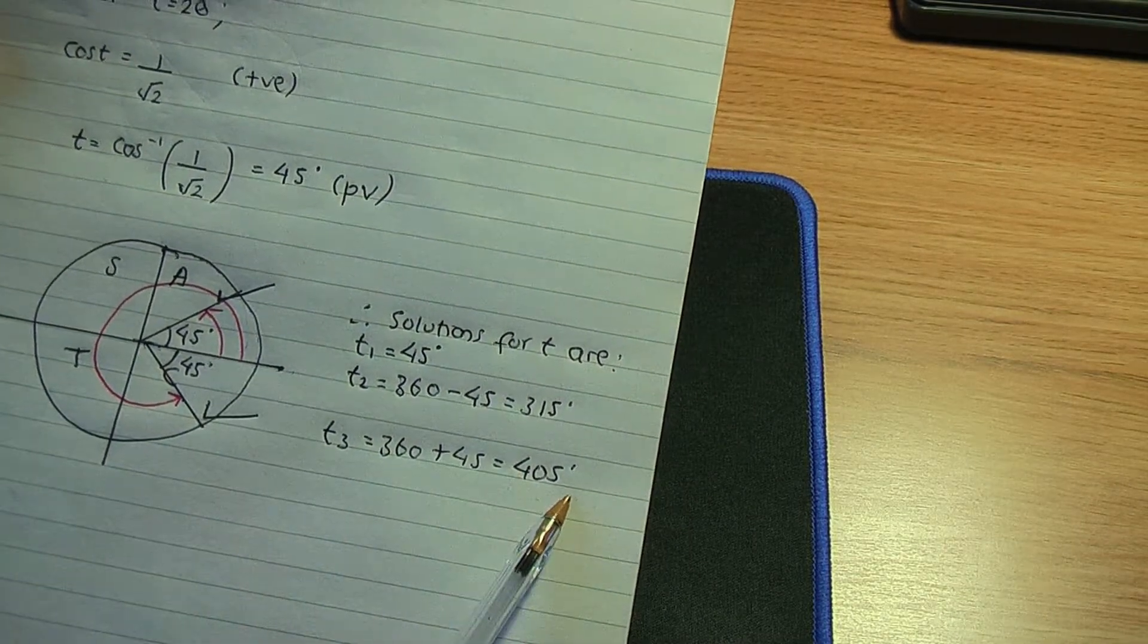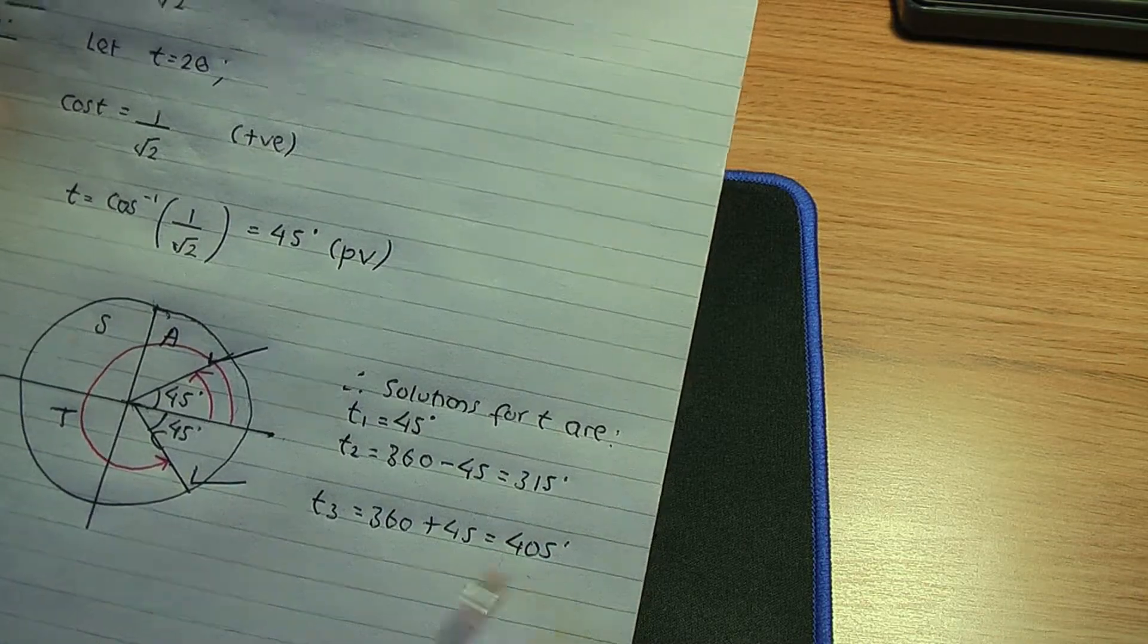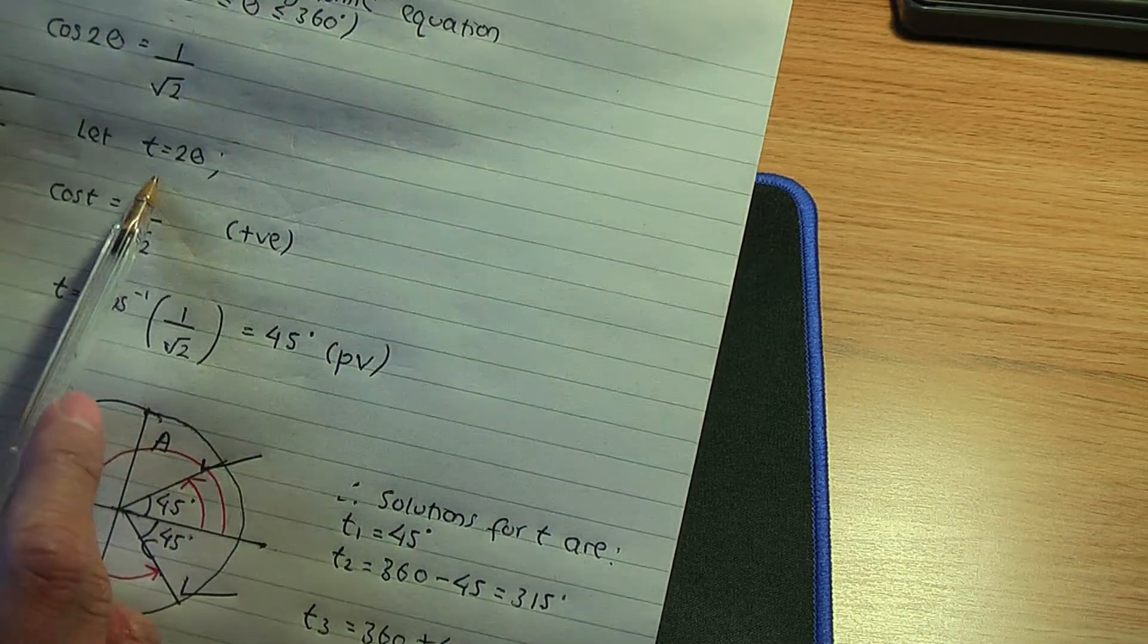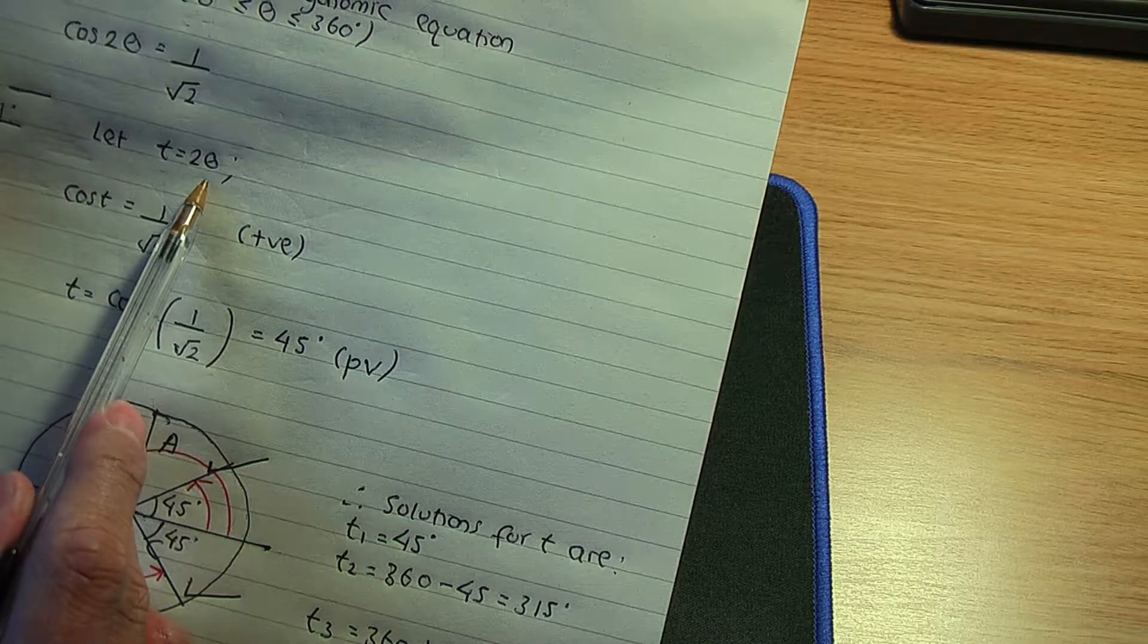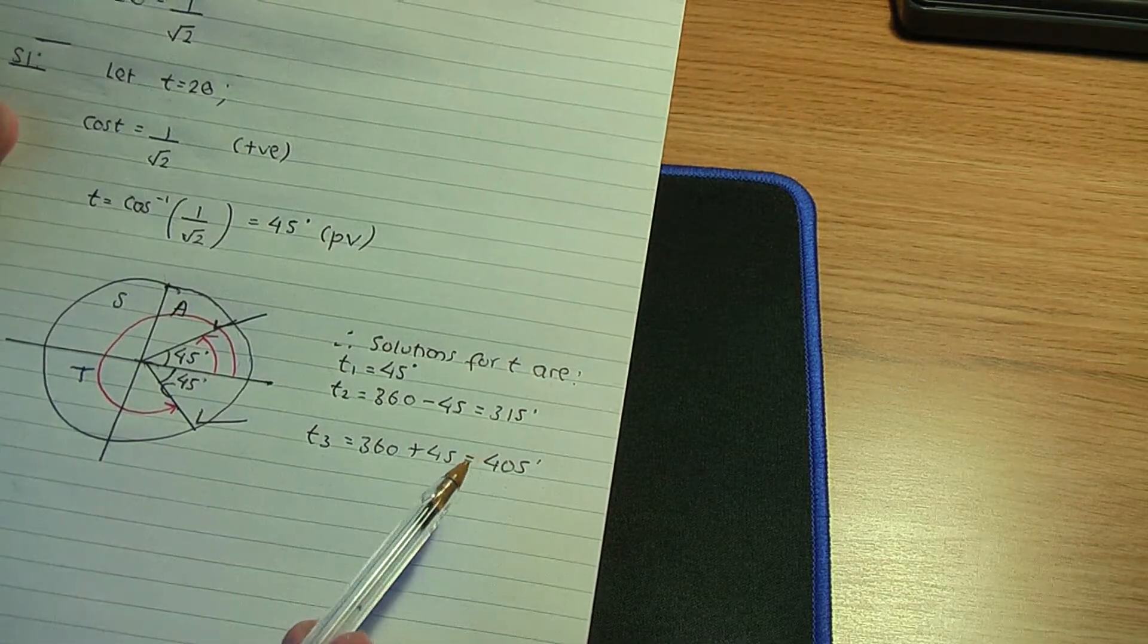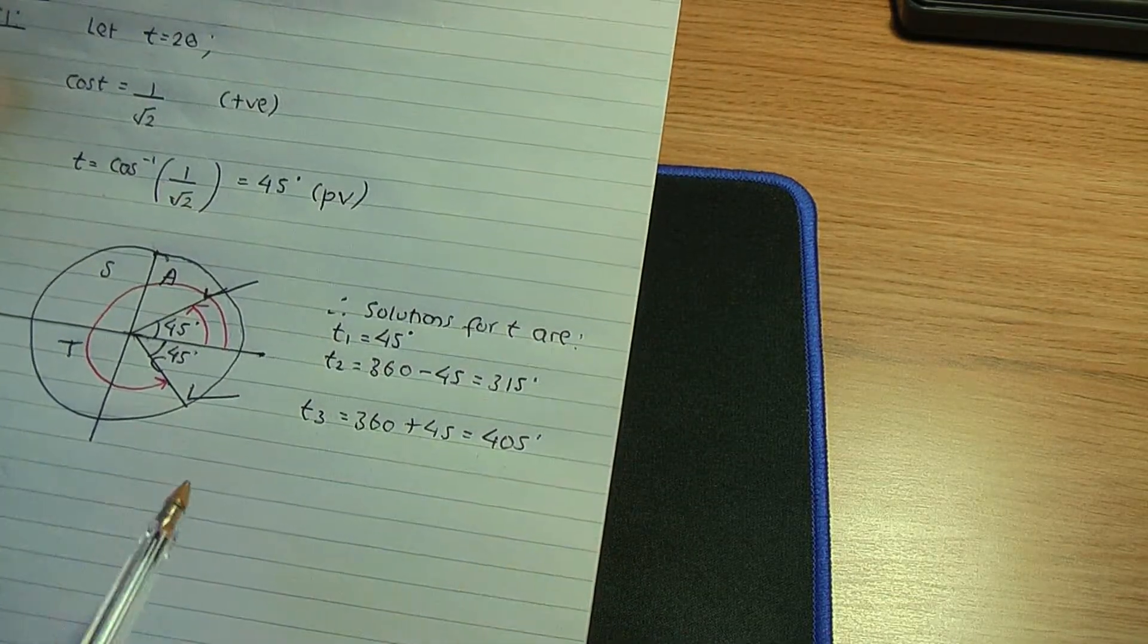t3 will be one complete revolution plus this acute angle of 45, so 360 + 45, that is 405 degrees.